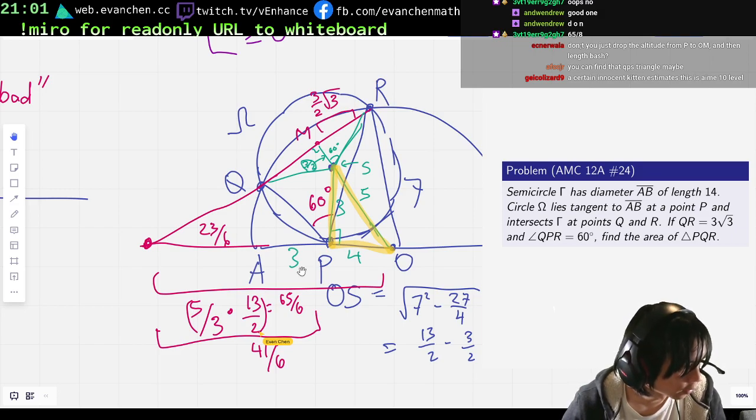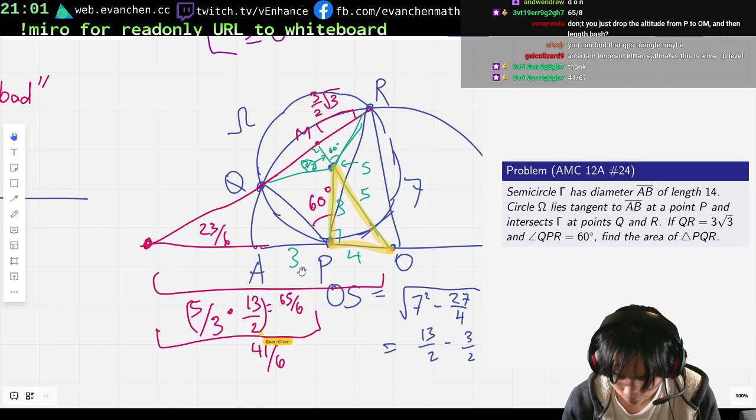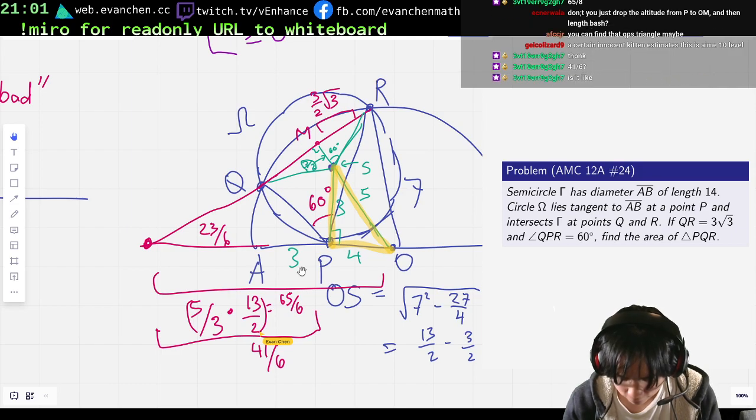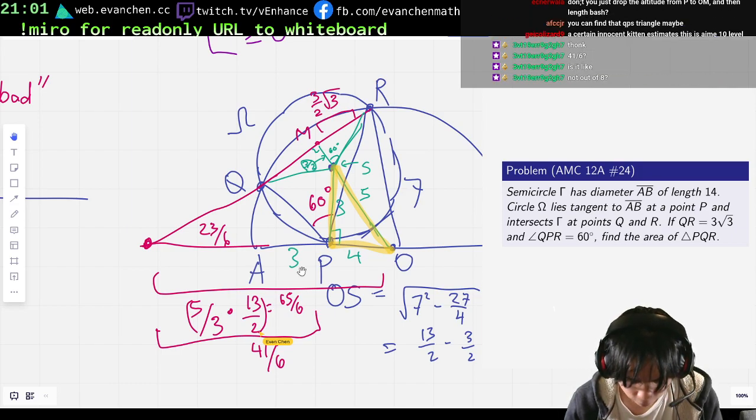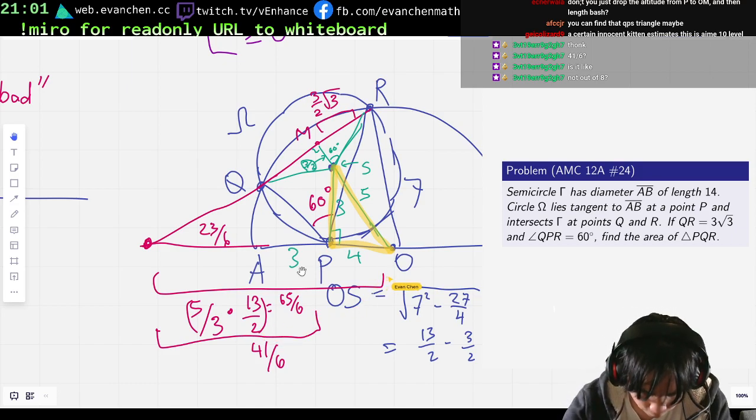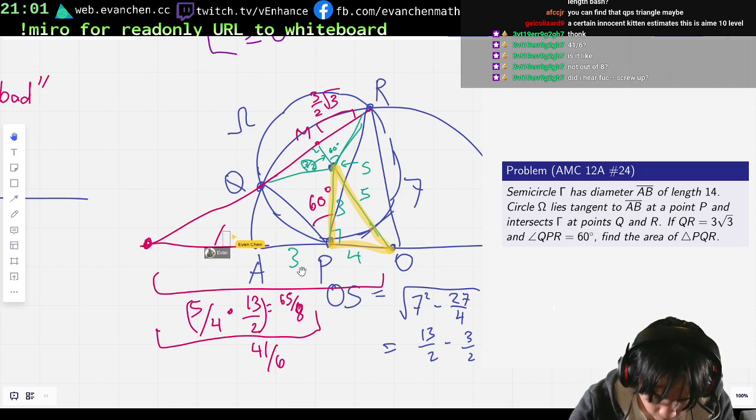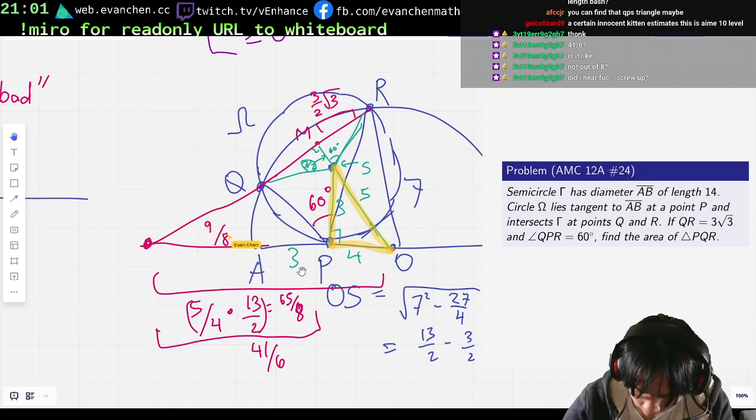Okay, great. And... Did I miscompute? 65... It's not like out of 8. Oh, did I screw up? Oh yeah, I screwed up. I used the wrong denominator. Okay, sorry. This is... Yeah, this is 5 quarters, not 5 thirds. Okay, so this is 65 over 8. So that means this thing is... 7... This is 9 eighths. And then plus 3 is 33 eighths.